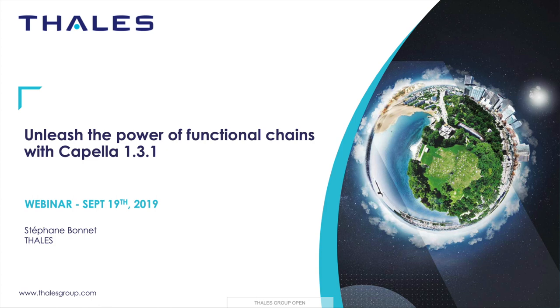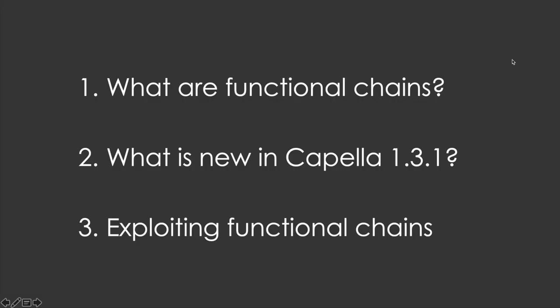With the evolutions we just released in June with Capella 1.3.1, we thought it would be a great moment to dedicate a webinar to this topic. I will first come back on what is a functional chain — its definition, how it compares to scenarios, how it relates to capabilities, to functions, and so on. Then I will focus on what is specific in Capella 1.3.1, including new ways to assemble functional chains and new ways to express sequence and control.